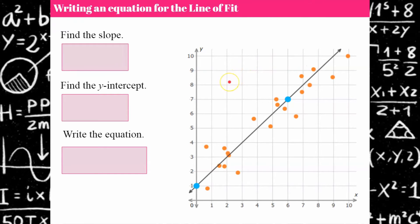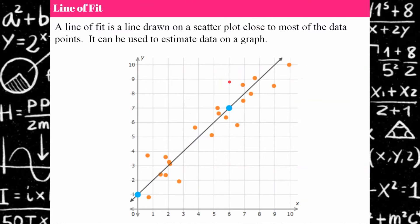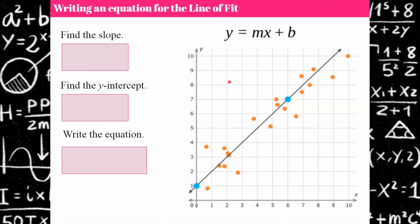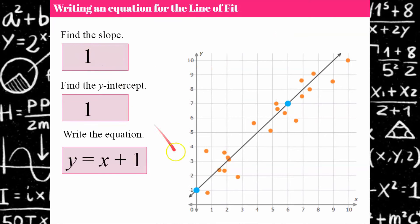Welcome back, let's see how you did. So we are going to use the slope intercept form y equals mx plus b and I hope you found that the slope was one.